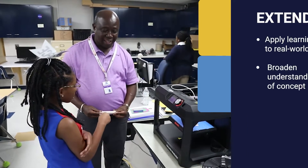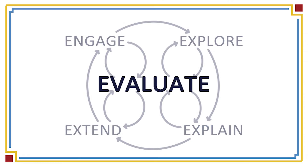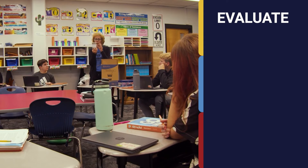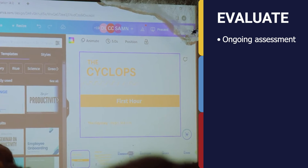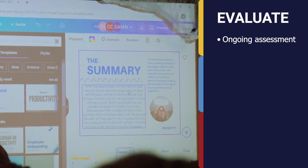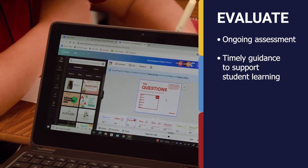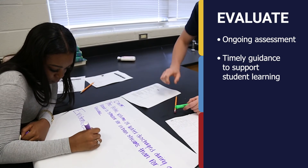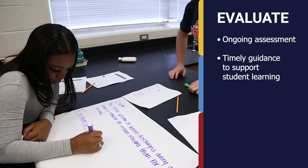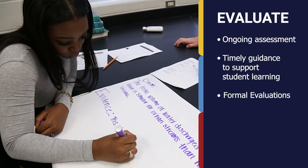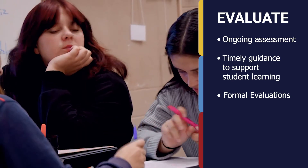We can think of the evaluate phase as the center of the 5E model because assessment is ongoing through the learning sequence. During each phase, the teacher checks for student learning through informal questioning and monitoring. This is used to determine progress toward the desired learning goal and to make just-in-time adjustments to the lesson to meet student needs. Formal evaluation of the learning goal occurs at the end of the lesson.